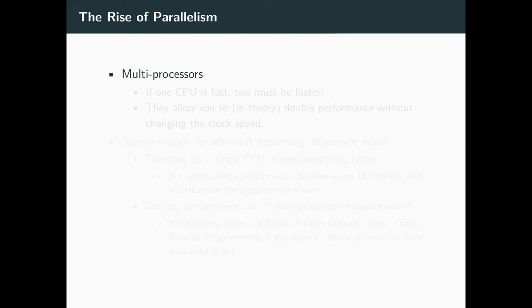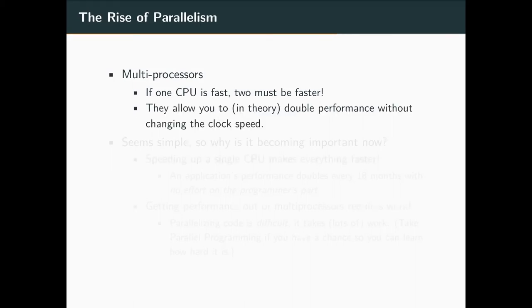So what do you do? We're able to add more transistors, but we can't just increase the frequency. So let's just make more processors — this is where the rise of multiprocessors has come along. If one CPU is very fast, why not make two? In theory, they allow you to double the amount of stuff you can do in the same amount of time without changing the clock speed. This is great, except it's hard.